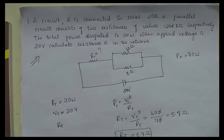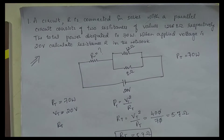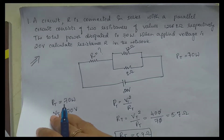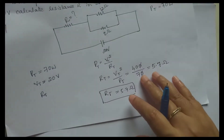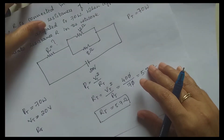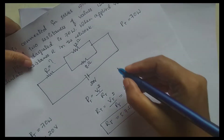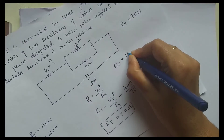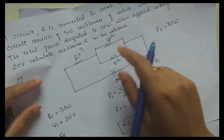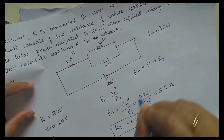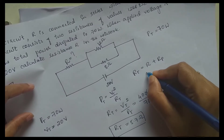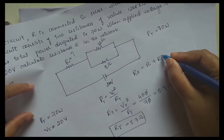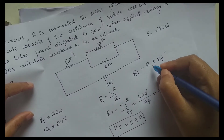Now using RT, we have to find the value of R. To do that, we first need to find the equivalent parallel resistance RP. Once we know RP, we can find R since RT = R + RP.